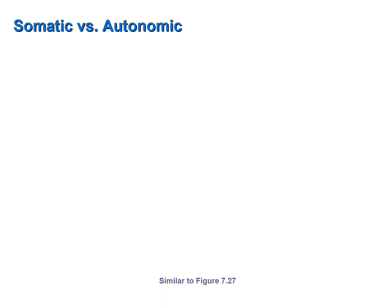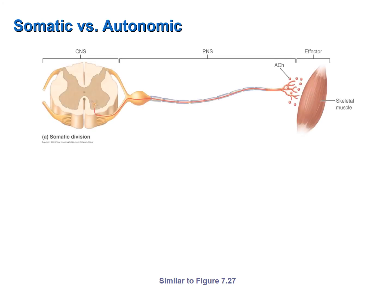Let's start by contrasting the motor pathway of the autonomic nervous system with that of the somatic nervous system. The somatic division controls our voluntary effectors — our skeletal muscles. The motor pathway from the central nervous system to skeletal muscle is a one motor neuron pathway, with the motor neuron's axon extending all the way out to the effector, the skeletal muscle.